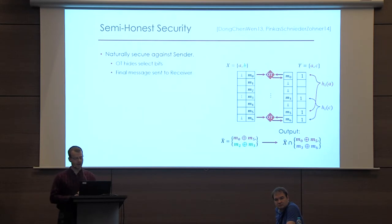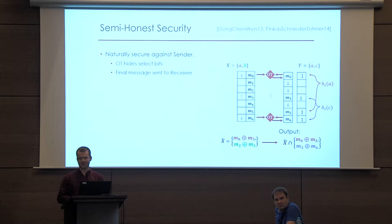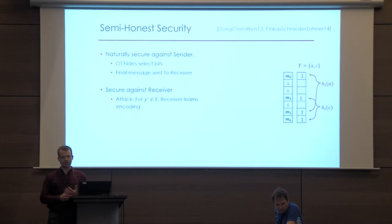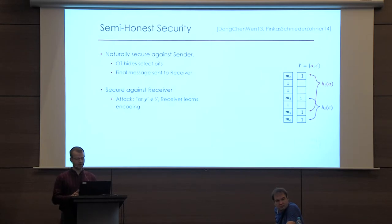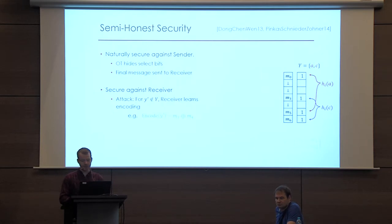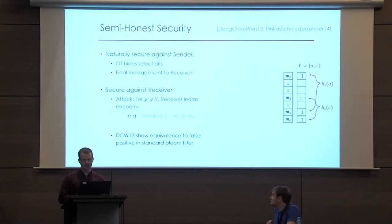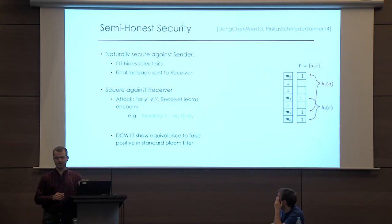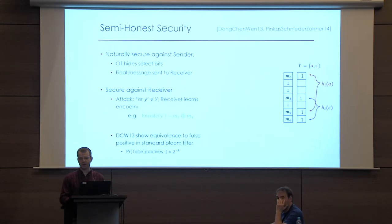In the semi-honest setting, it's not hard to see that this is secure against a semi-honest sender — all arrows leave the sender so it can't leak any information, and the OTs hide the selection bits. It is also secure against a semi-honest receiver. Pretty much the only thing they can do is, for some Y not in their set, they may be able to learn the encoding. For example, the encoding of Y is M3 XOR M4, but M4 isn't in the set of messages that they know. Dong-Chen-Wen showed an equivalence between the false positive rate in a traditional Bloom filter and this style of attack, so this can be bounded to be negligible. In the semi-honest setting, everything works out great.